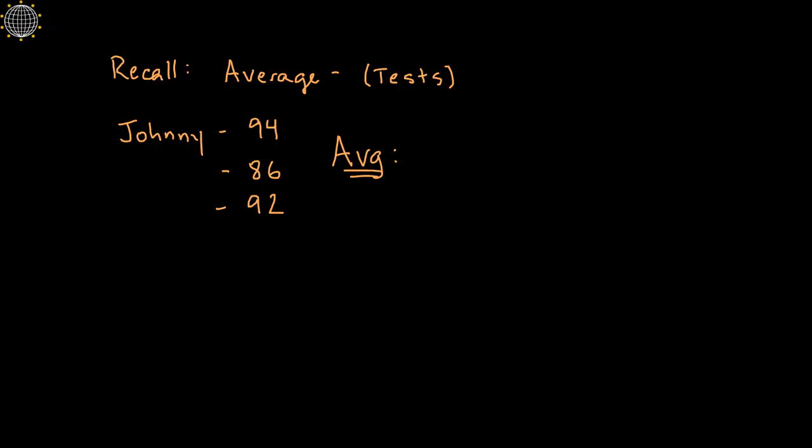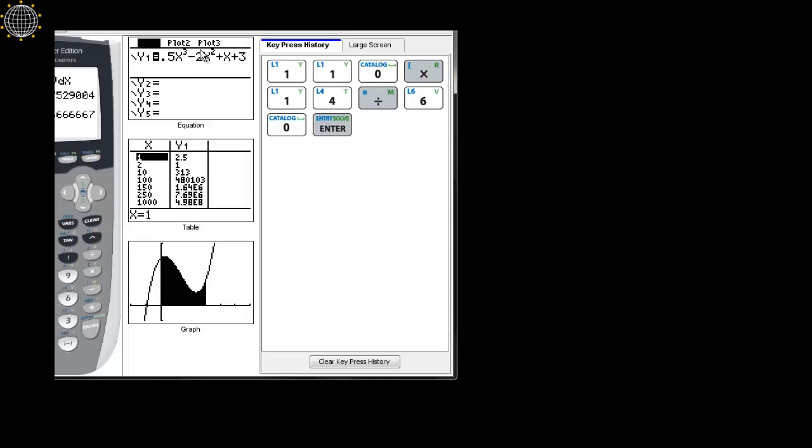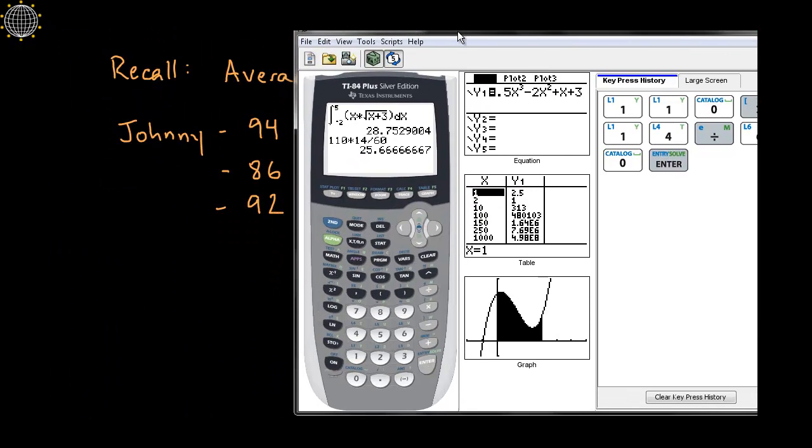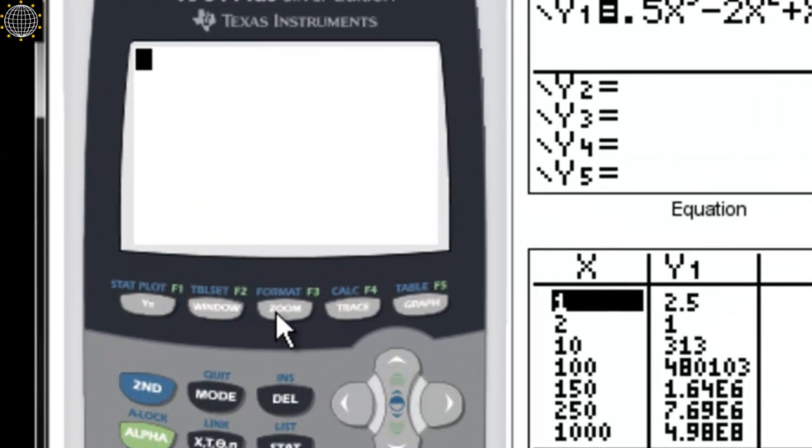So here, just as a simple example, let's say Johnny gets test grades of 94, 86, and 92, and he wants to know his test average. Well, as we remember, probably from high school or even middle school, all we would have to do here is simply add these up.